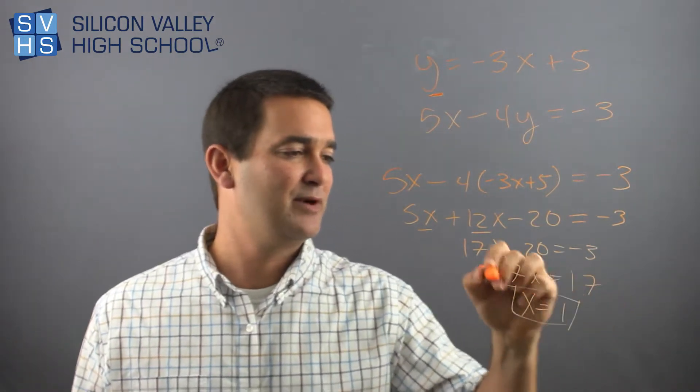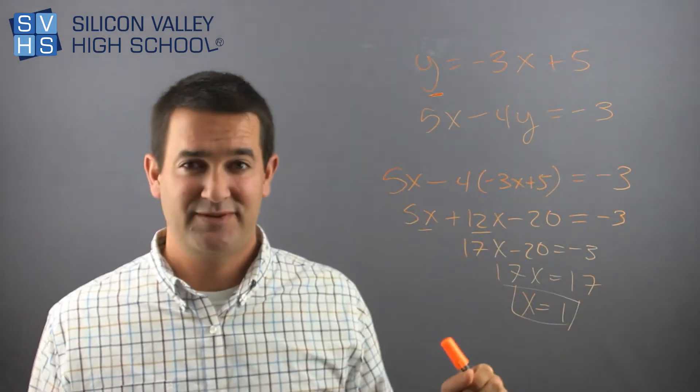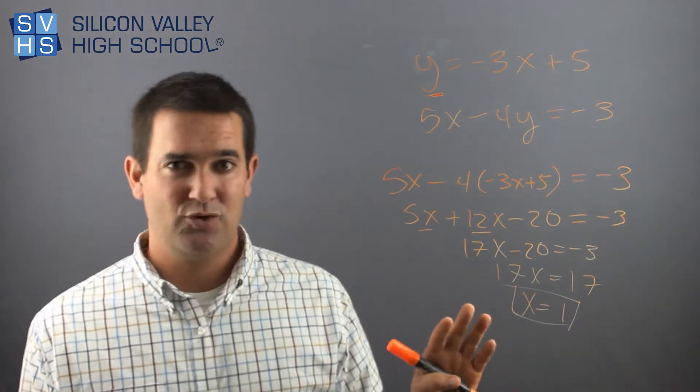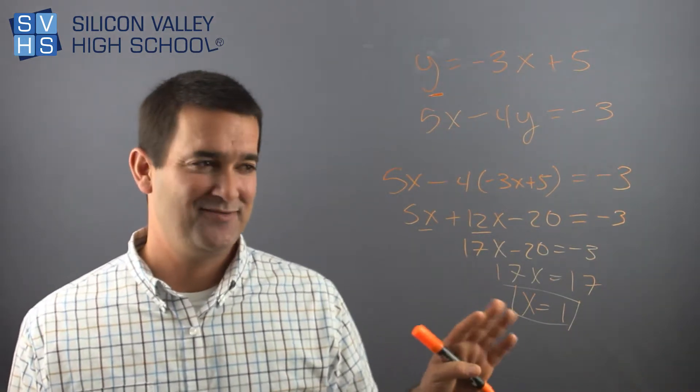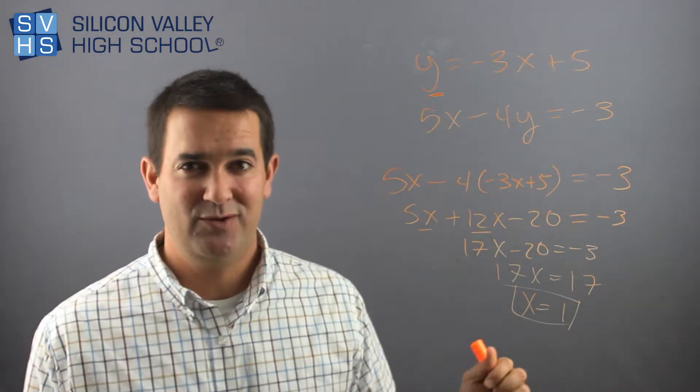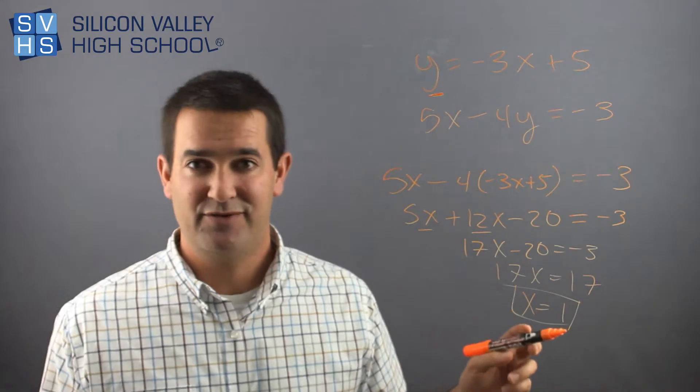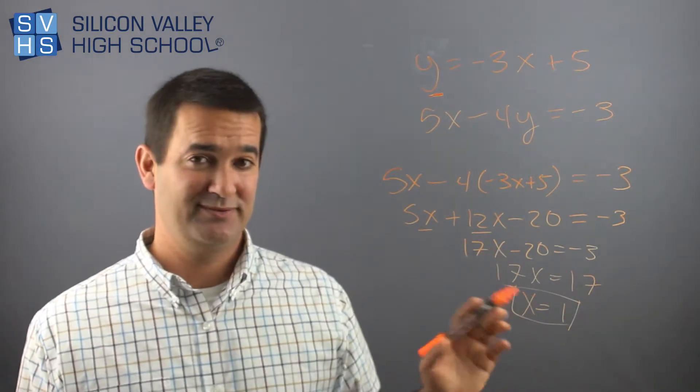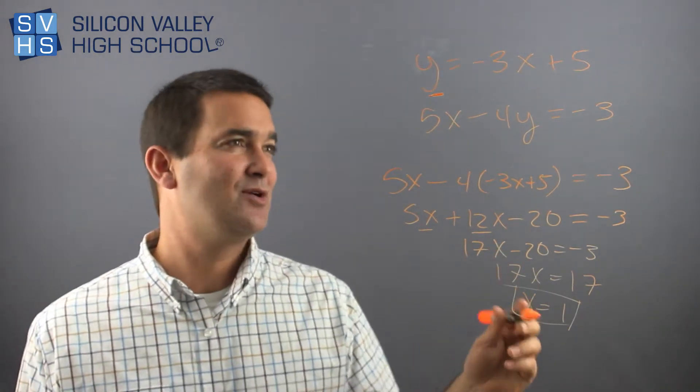Just for the record, pretty much on every one of these systems of equations problems, this is not totally a rule, but you should get a whole number. They almost always work out cleanly because no one wants to grade one that's like 17 over 3. It's possible, so don't get mad at me if that happens, but usually it's a whole number.